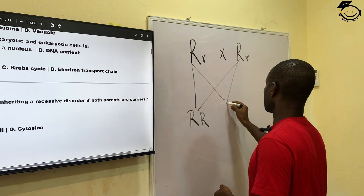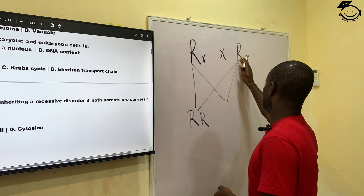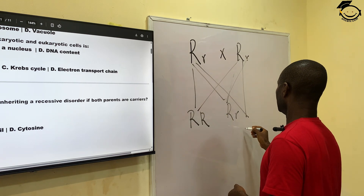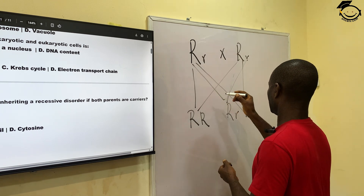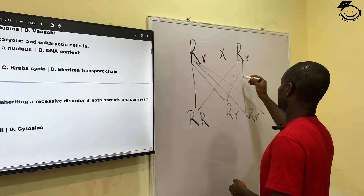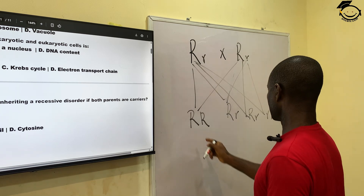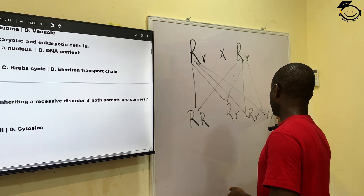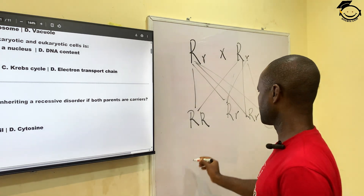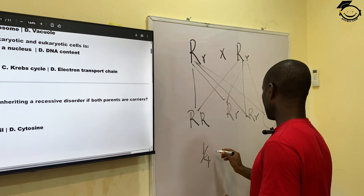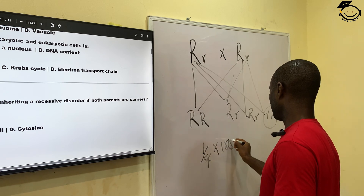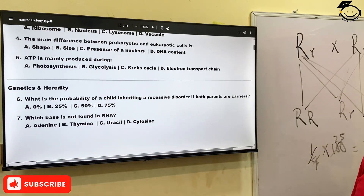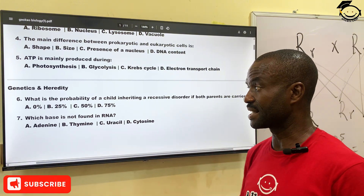The first offspring, the second offspring — so out of these four, we have one, two, three. These three are carriers, except this one. This is the recessive. So out of four, one is recessive. One out of four times 100% gives us 25%. The correct answer is B, 25%.